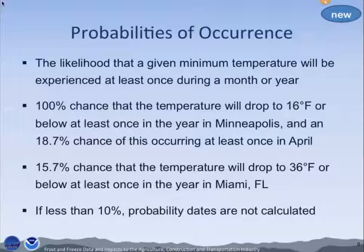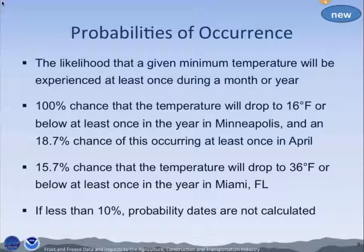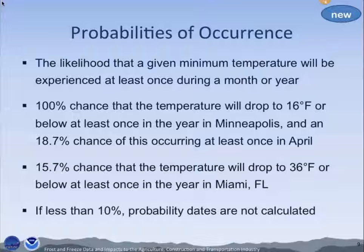We have probabilities of occurrence — this is actually a new component of the supplemental normals, we haven't done this before. It's essentially the likelihood that a given minimum temperature will be experienced at least once during a month or year. For example, in Minneapolis there's a 100% chance you'll drop down to 16 or below at least once in a year. The kicker is that in April, there's an 18.7% chance you can get down to 16 sometime in April in Minneapolis. By contrast, in Miami, Florida, there's only a 15% chance in any given year that you'll get down to 36. For Miami at 32 degrees, it's actually less than 10%, so we wouldn't even provide dates — we don't provide dates if it's less than 10%.